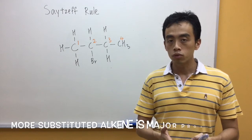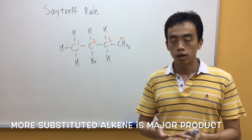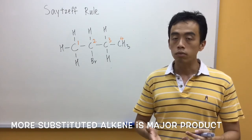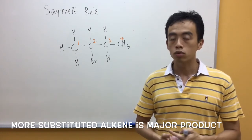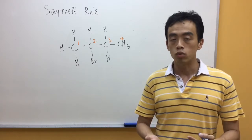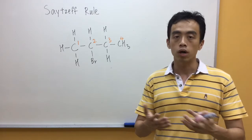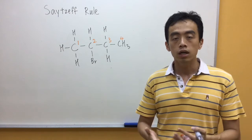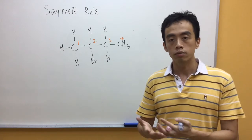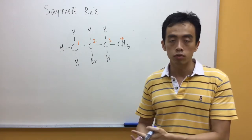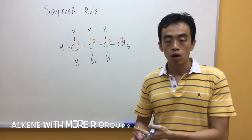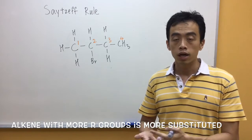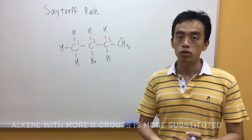Now, the CZF rule states that the more substituted alkene will be the major product. So, what we basically need to do is draw out the products and decide which product is more substituted — basically which alkene has more R groups — and that will be the major product.